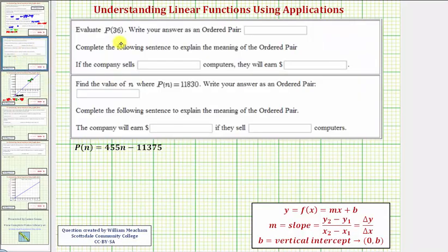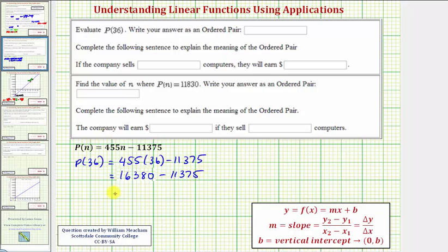Next we're asked to evaluate p of 36 and then write it as an ordered pair. So to evaluate p of 36, we substitute 36 for n. So this is 16,380 minus 11,375, which equals 5,005.